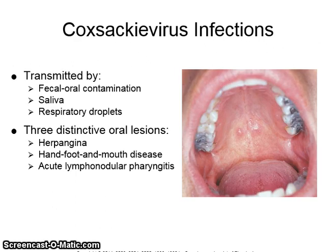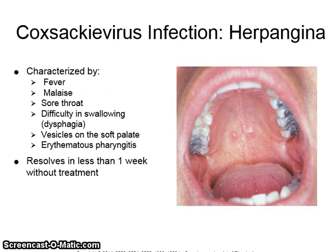Coxsackievirus infections are transmitted by fecal-oral contamination, saliva, and respiratory droplets. Three distinctive oral lesions caused by Coxsackievirus are herpangina, hand-foot-and-mouth disease, and acute lymphonodular pharyngitis. Herpangina is characterized by fever, malaise, sore throat, difficulty in swallowing (dysphagia), vesicles on the soft palate, and erythematous pharyngitis. It usually resolves in less than a week without treatment.